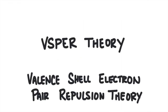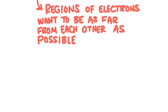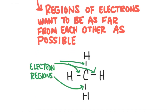The shape of a molecule is explained by a theory called VSEPR theory. It stands for valence shell electron pair repulsion theory. The theory says that regions of electrons around a central atom are going to want to get as far away from each other as possible, because electron regions are negatively charged and like charges repel. So if I have four electron regions in two dimensions, the molecule is going to look like this because that's as far as these regions can get from one another.